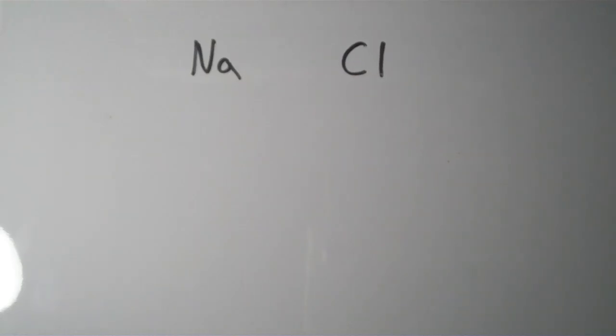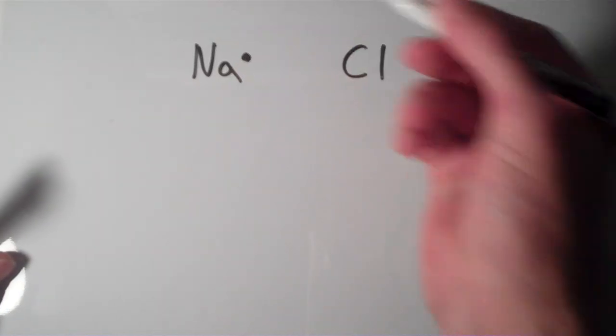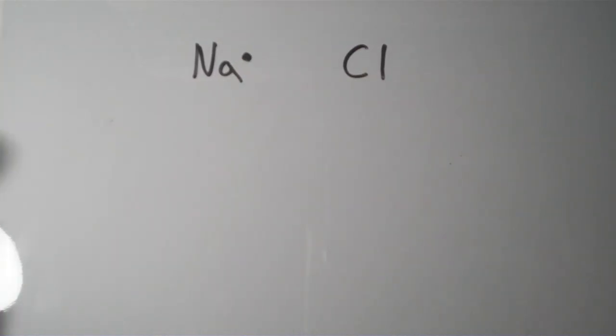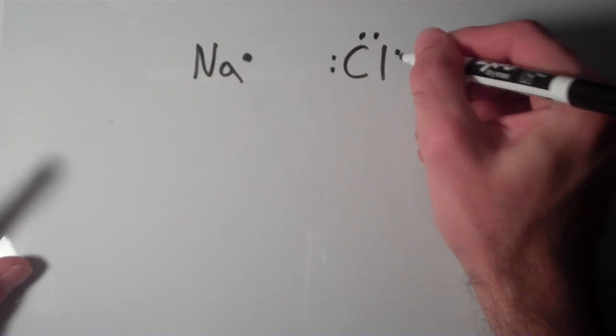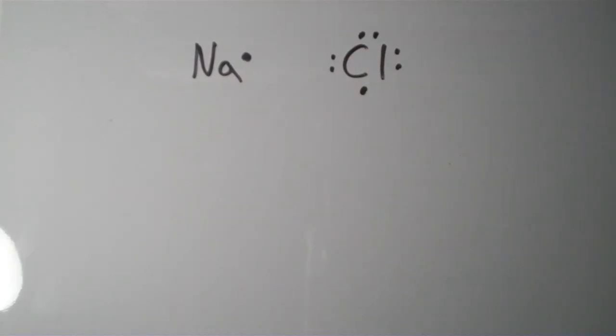Well, one way to start is simply by drawing the Lewis structures of both compounds. And sodium has one valence electron, so its Lewis structure looks like this. Chlorine has seven valence electrons, so its Lewis structure looks like that.